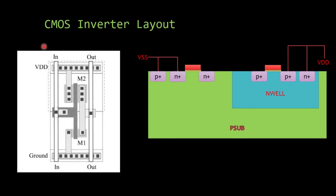This is the CMOS inverter layout which you might have seen in the textbook. The one on the right side is the cross-sectional view of the actual physical layout. Of course, a lot of connections are missing in the layout - there is no gate connection shown here and the output connected to both drains is not shown - but all the required information is portrayed. It has an NMOS within this P substrate and a PMOS within this N-well substrate, and well connections are also shown with P-plus and N-plus diffusions.